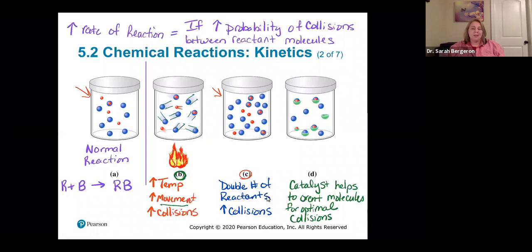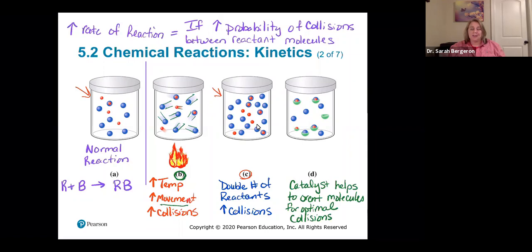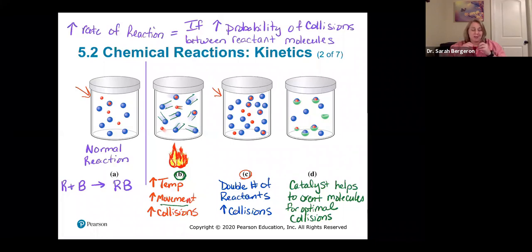The second factor: we can double the number of reactants. If you increase the number of red molecules and blue molecules in the beaker, you're increasing the concentration of reactants, and that increases collisions. Like cars on a road — if you only have a few cars, they're not likely to come into contact. But if you have a lot more molecules, it's much more likely they'll get close enough to react. So if you increase the amount of reactants, you increase your collisions.